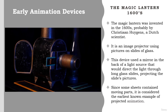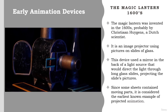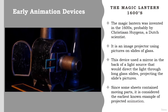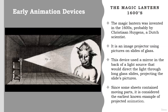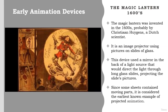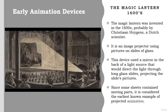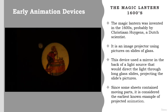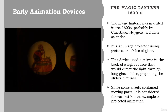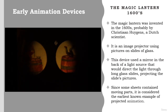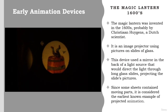The Magic Lantern was invented in the 1600s, probably by Christiaan Huygens, a Dutch scientist. It is an image projector using pictures on slides of glass. This device used a mirror behind a light source, originally a candle, that would direct the light through long glass slides, projecting the slide's pictures. Since some sheets contained moving parts, it is considered the earliest known example of projected animation.